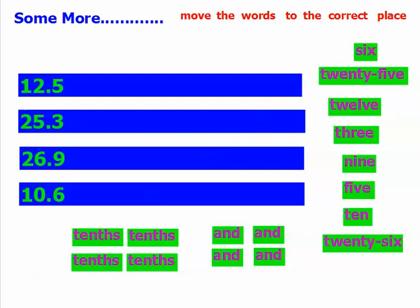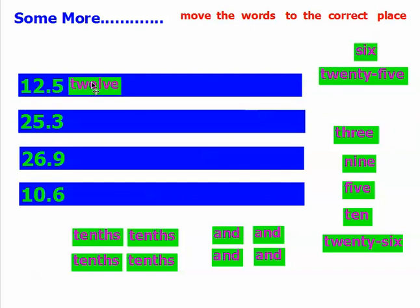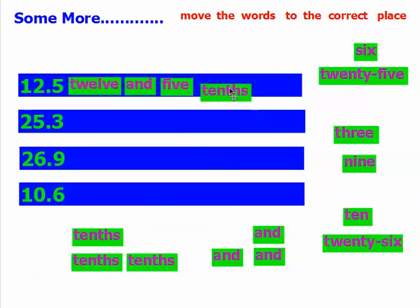Now let's practice writing words to represent our decimals. You start with the whole numbers. We've got 12 and — we have a decimal point, so we say 'and' — there's a 5 in the tenths place value, so we just say the number 5 and then the place value. So: 12 and 5 tenths.